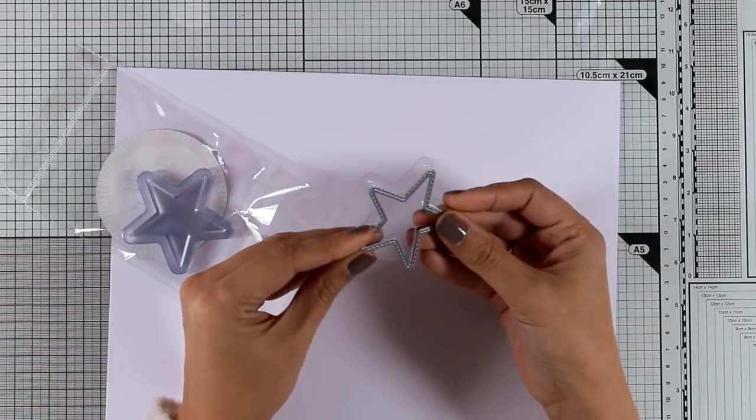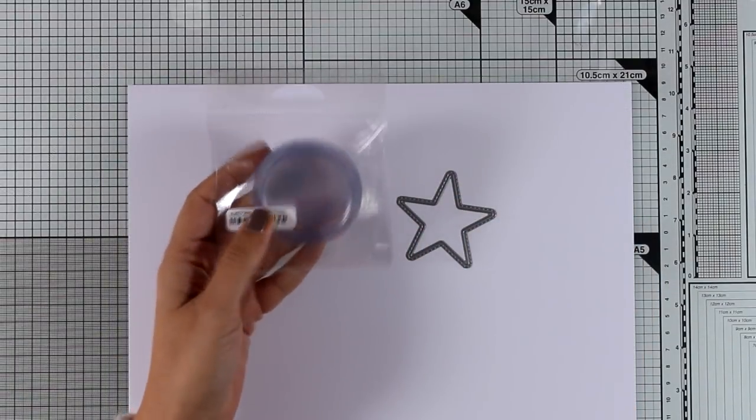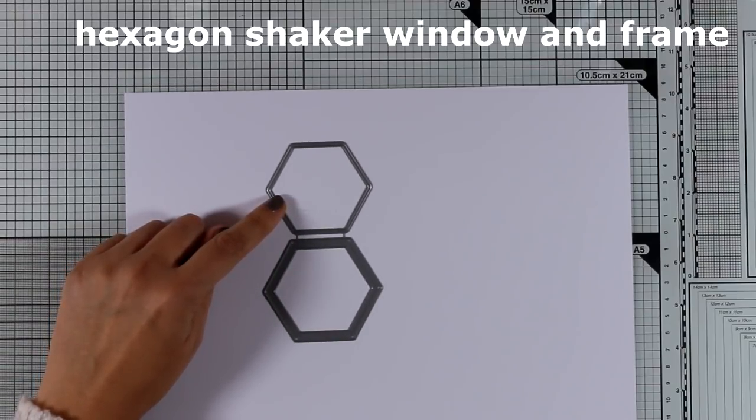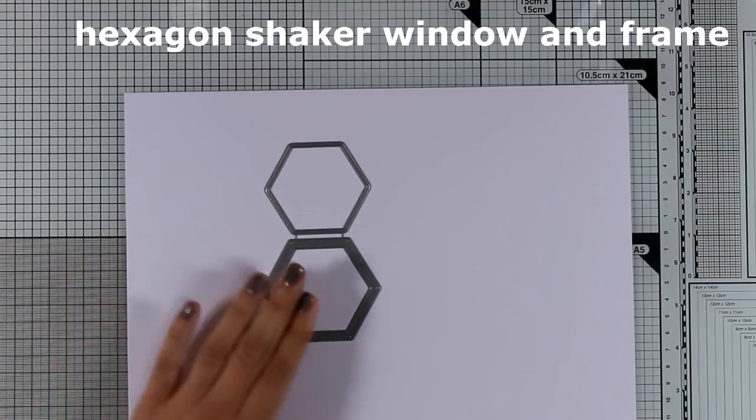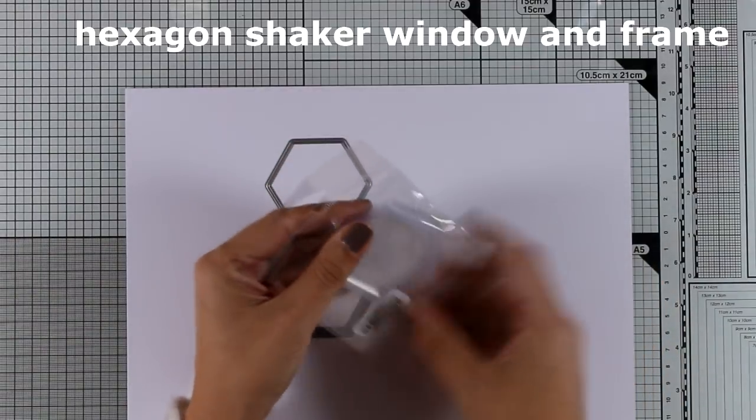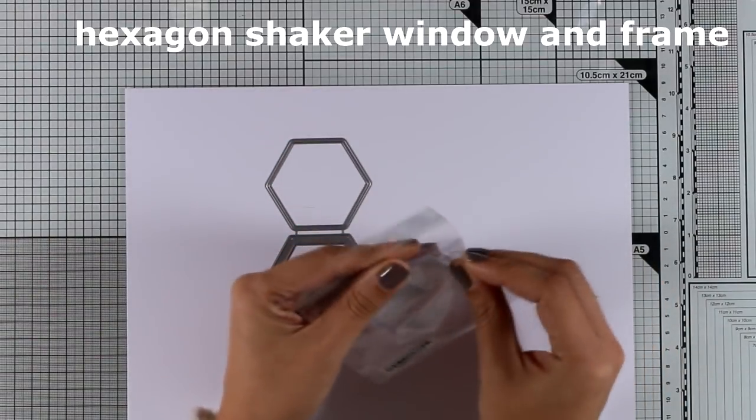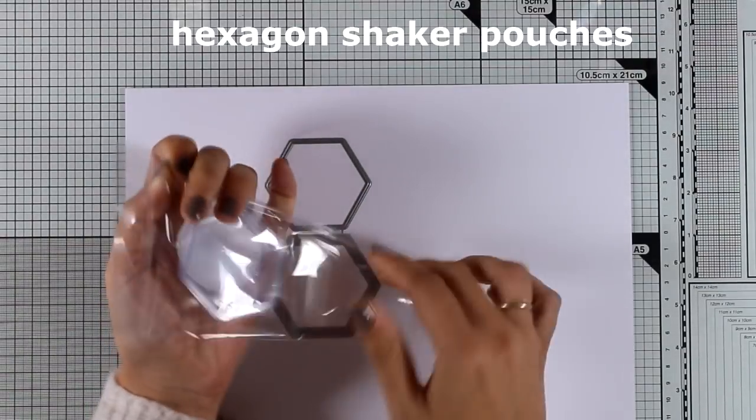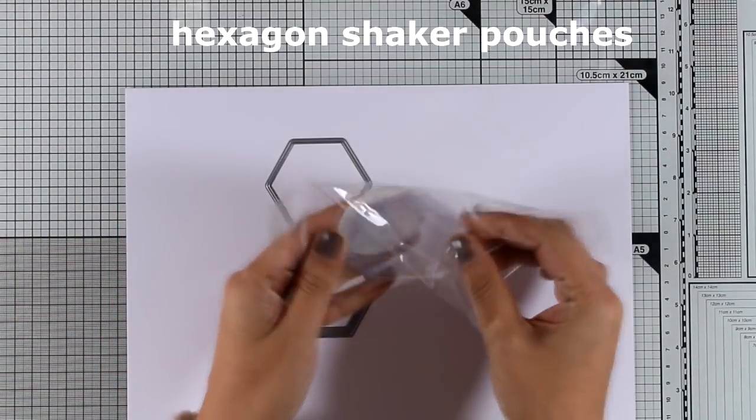confetti to create shaker cards. And there are many shapes available by My Favorite Things such as little ovals, circles, hearts and now hexagons. So this is the hexagon shaker window and frame that you can combine to create lovely shaker cards with that shape and of course they have come up with a pouch, a plastic pouch that fits perfectly inside that window.